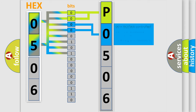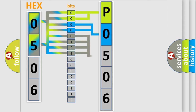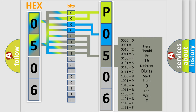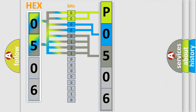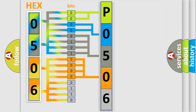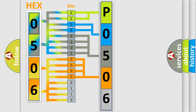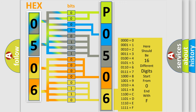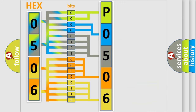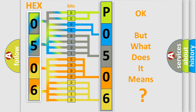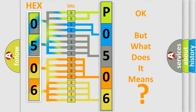The next two bits determine the second character. The last bits of the first byte define the third character of the code. The second byte is composed of a combination of eight bits. The first four bits determine the fourth character of the code, and the combination of the last four bits defines the fifth character. A single byte conceals 256 possible combinations. We now know how the diagnostic tool translates the received information into a more comprehensible format.